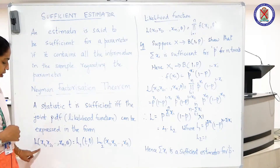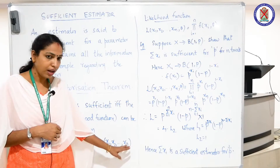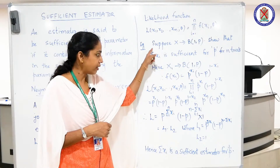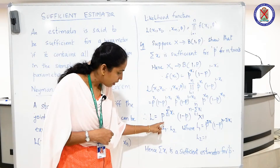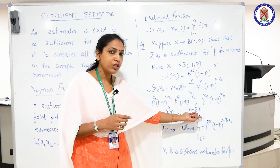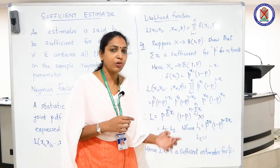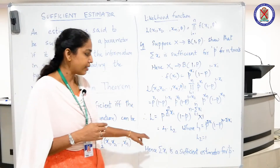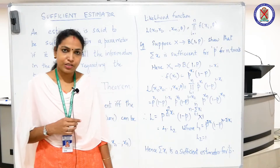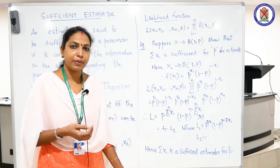This form is L(x1, x2, ..., xn; theta) = L1(t, theta) * L2(x1, x2, ..., xn). Our statistic — our estimator — is Σxi. We can identify L1 = p^(Σxi) * (1-p)^(n - Σxi), which depends on Σxi, and L2 = 1, which is independent of the statistic. Therefore, Σxi is a sufficient estimator for theta, meaning Σxi provides all the information about the parameter p.